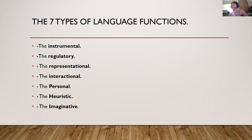The fourth is the interactional function, which serves to ensure social maintenance, referring to communicative contact between and among human beings. It simply allows people to establish social contact and to keep channels of communication open. Successful interactional communication requires knowledge of slang, jargon, jokes, folklore, cultural norms, politeness and formality expectations, and other keys to social exchange.